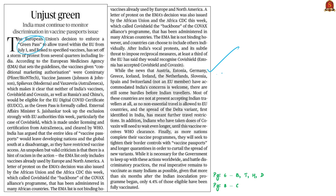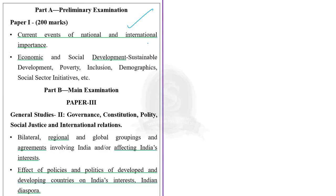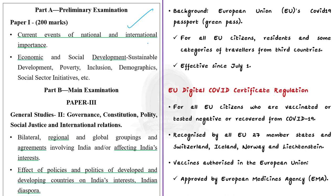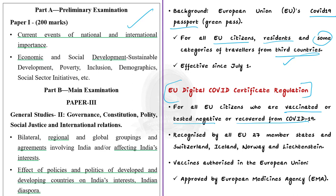The Green Pass refers to a COVID-19 passport — formally called the EU Digital COVID Certificate Regulation — made available since July 1st for all EU citizens, residents, and specific categories of travelers from third countries. This certificate proves that the holder has been vaccinated, tested negative for coronavirus, or has recovered from COVID-19. It is issued for free by national authorities and recognized by all 27 EU member states, as well as Switzerland, Iceland, Norway, and Liechtenstein.